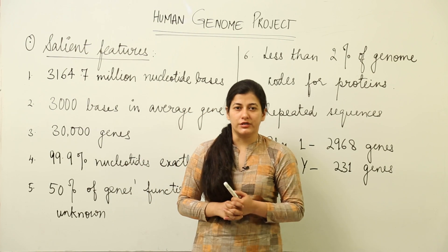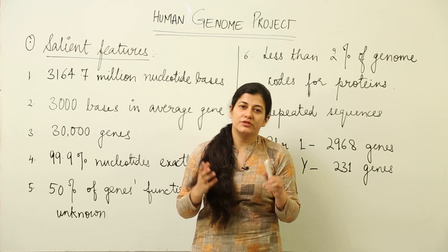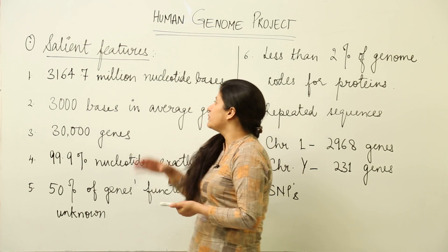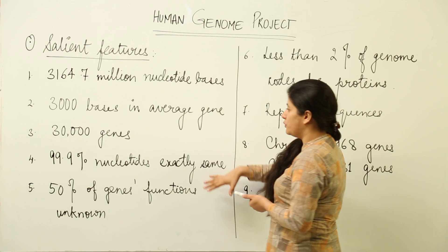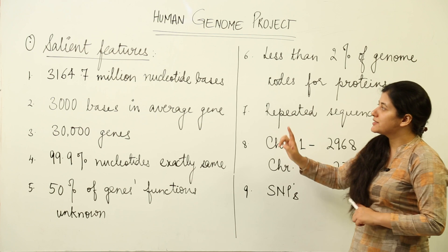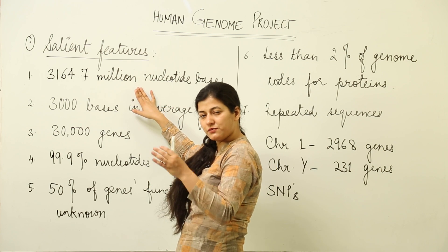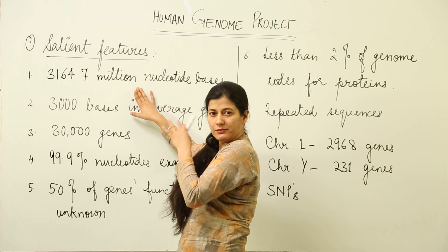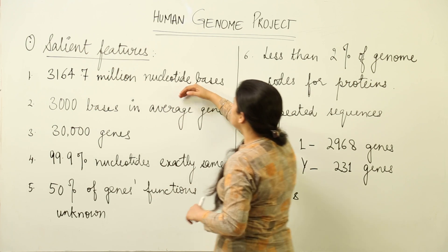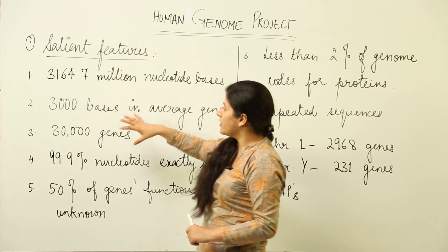Now we're going to talk about the salient features — a quick look at what the Human Genome Project has given us in terms of information. We are going to analyze nine of them one by one. The first one is: how many nucleotide bases are there? As we discussed earlier, there are approximately 3.3 billion base pairs — 3,164.7 million nucleotide bases.